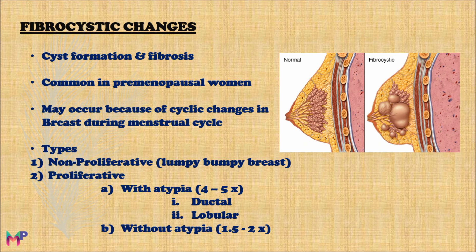The proliferative type with atypia is further divided into two types: the ductal proliferative benign epithelial lesion with atypia, and the lobular proliferative benign epithelial lesion with atypia. The term fibrocystic change is specifically used for the non-proliferative type of the benign epithelial lesion.